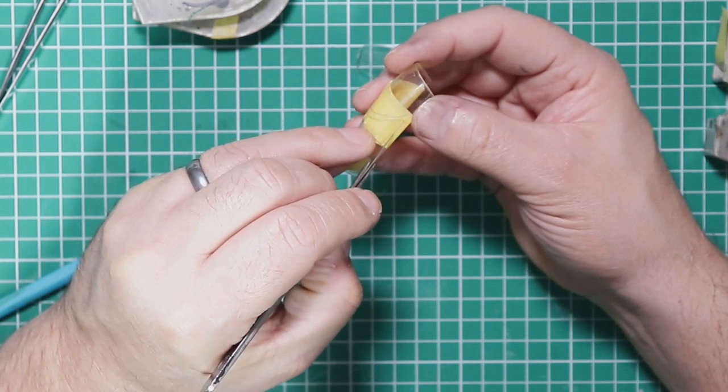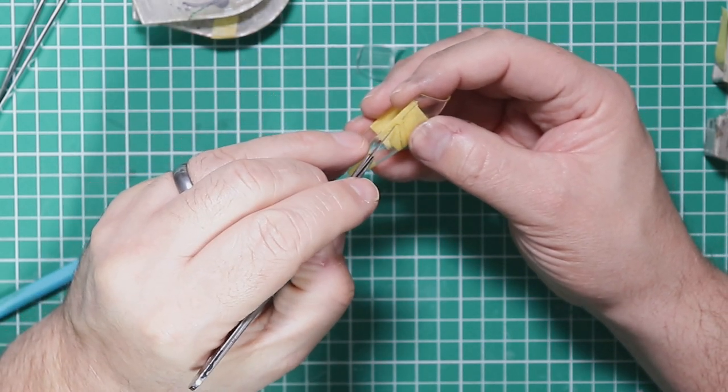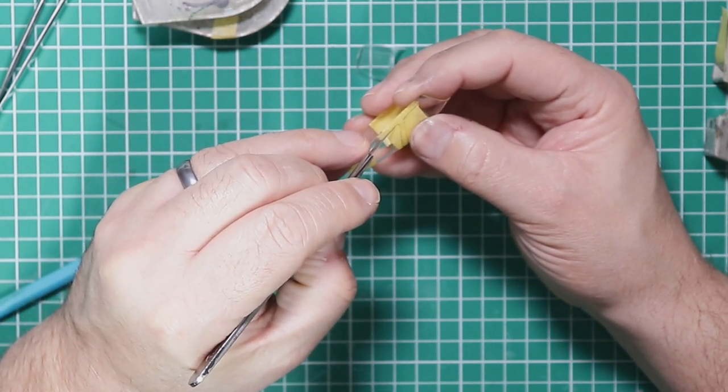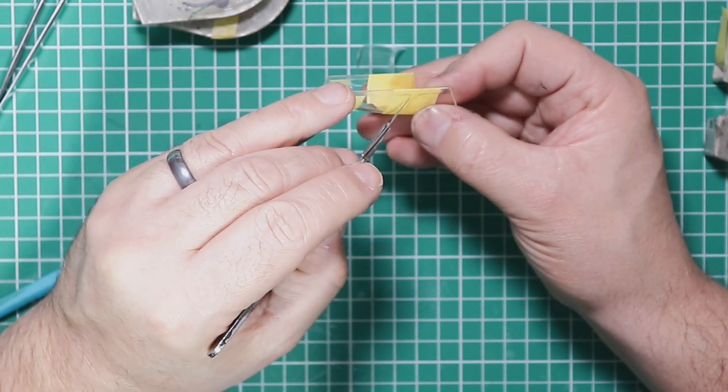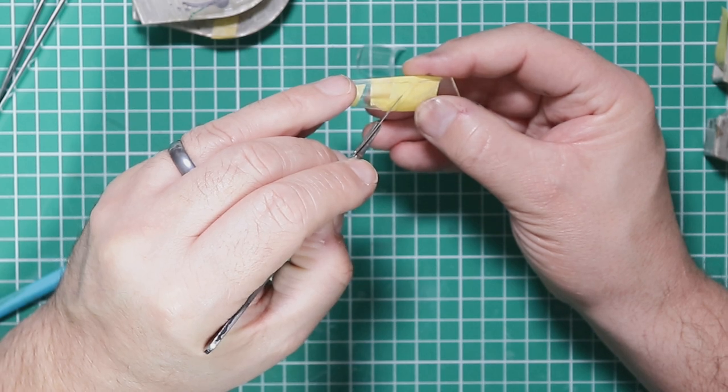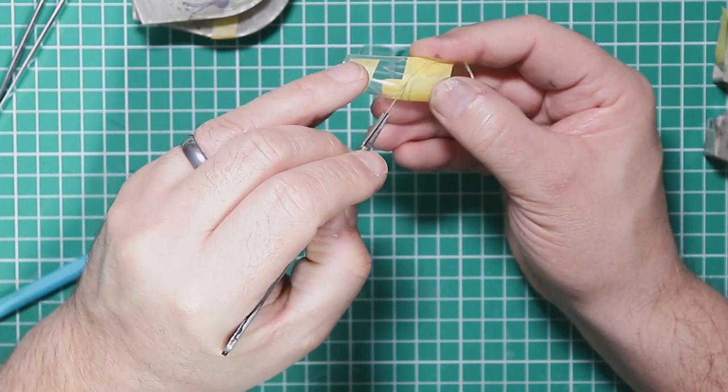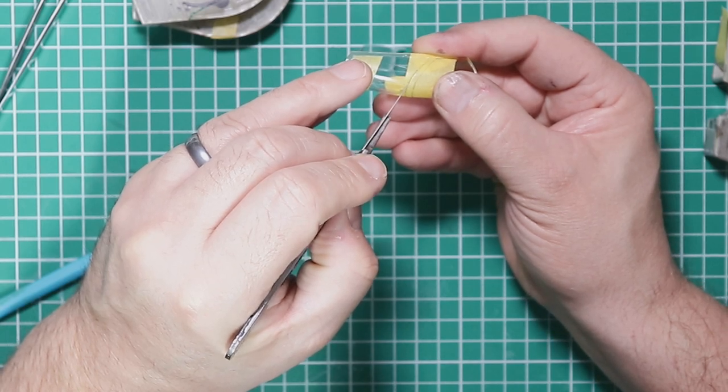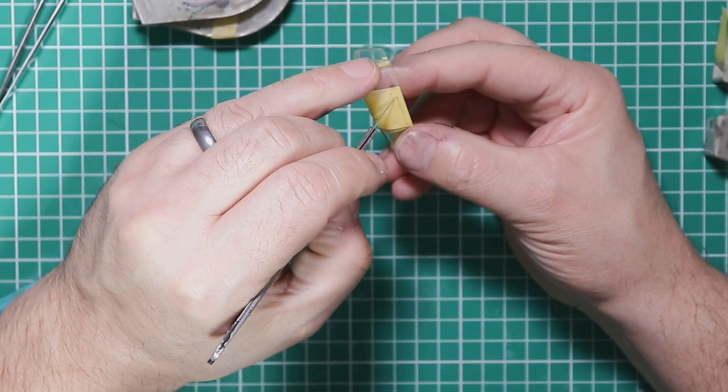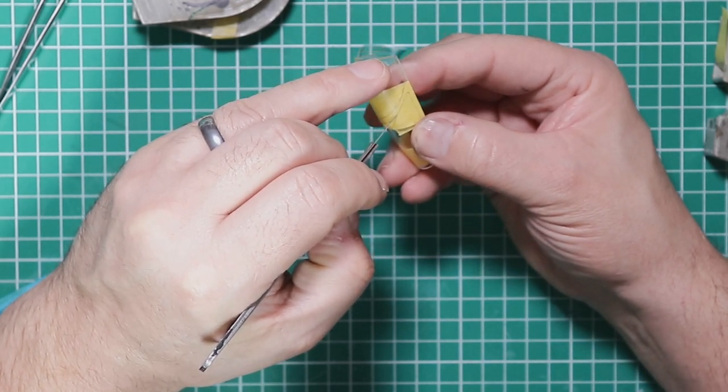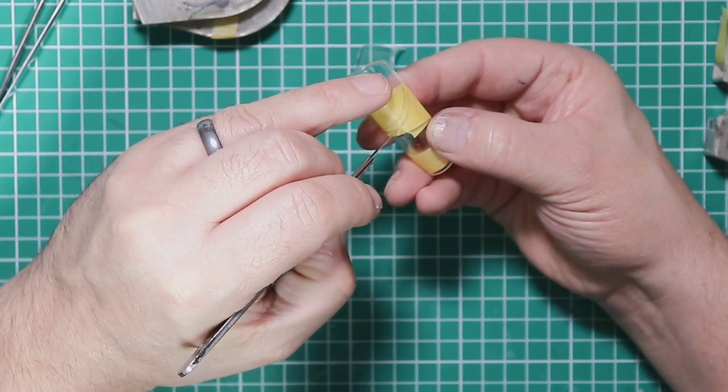We're going to do this other section. Again, nice straight edge, and then again just following the framework to the center, and then from the other side over the top for the two cuts to meet.